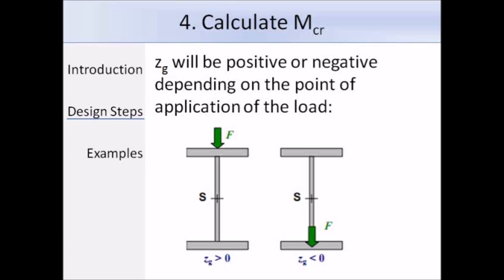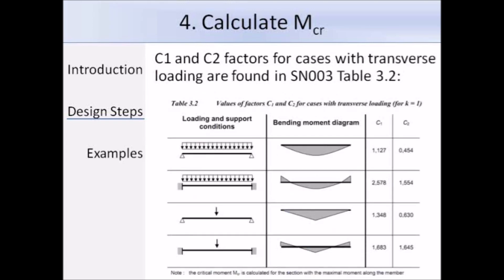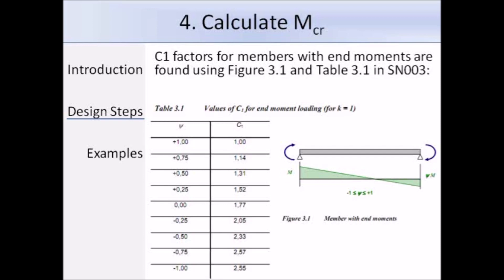C1 and C2 are coefficients used to take into account the shape of the bending moment diagram. This slide shows an extract from SN003, table 3.2, which gives the C1 and C2 factors for different types of loading and support conditions; you use this table when you have transverse loading. For a case where you only have end-moment loading, you should refer to table 3.1 and figure 3.1 from the SN003 document to get the value of C1.